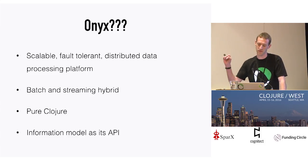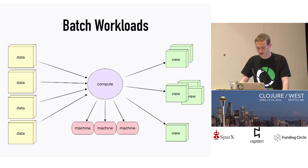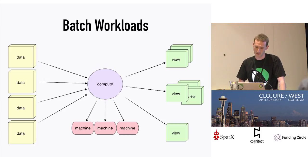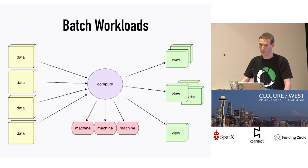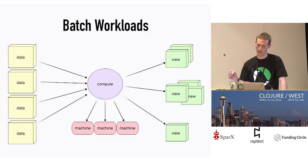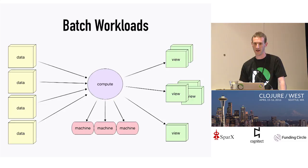We wanted to get as close to data structures as we could in terms of communicating what your computation is. When I say it handles batch workloads, I'm talking about taking a set of static, bounded, finite data, applying a set of pure transformations using multiple machines — which we call a cluster — and producing immutable output data sets based on that original corpus. This is an immutable transformation to more immutable data. You'd probably do this for aggregation, indexing, or offline computation.